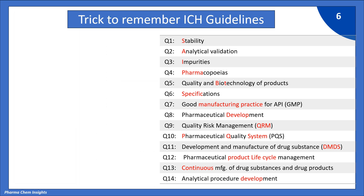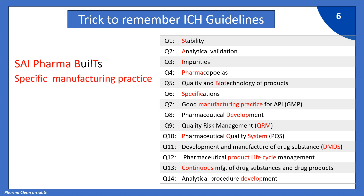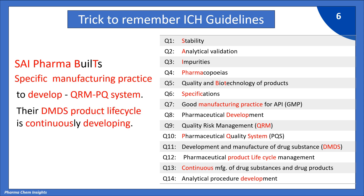Here is the trick to remember ICH guidelines. Memorize this sentence: "SAI Pharma builds specific manufacturing practice to develop QRM PQ system." In this sentence, SAI represents the first three guidelines Q1 to Q3: S decodes stability, A decodes analytical validation, and I decodes impurities.